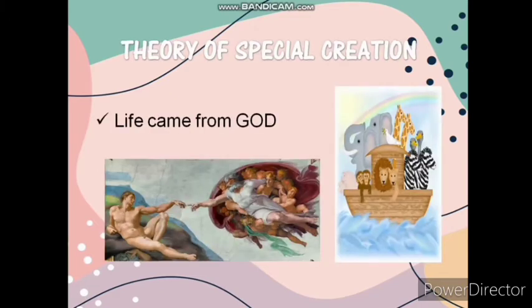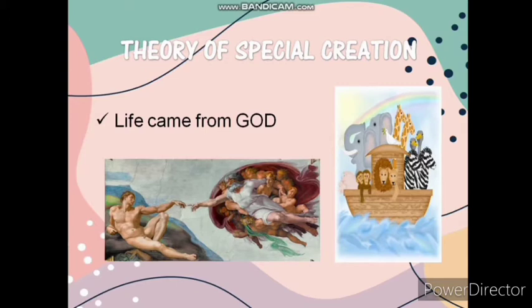The first theory is Special Creation, which is known as the earliest hypothesis about the origin of life. There is no evidence found to support this theory, but it explains that life came from the supernatural power of God. This theory is based on biblical beliefs, just like in Genesis 1, which says that in the beginning, God created the heaven and the earth and created different kinds of plants and animals according to their kinds in six natural days. Until now, it remains a major topic of debate, as we are still questioning why and how life exists.